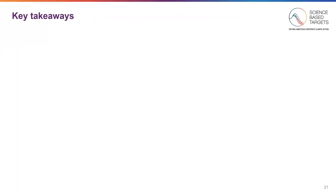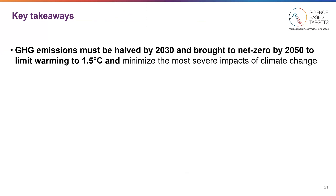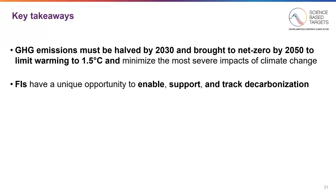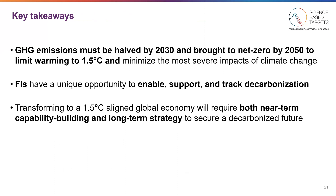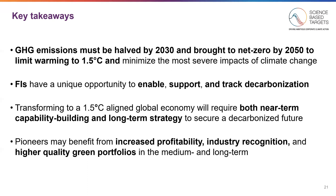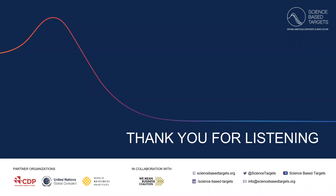Concluding this module, you should leave with a few key takeaways. Greenhouse gas emissions must be halved by 2030 and brought to net zero by 2050 to limit warming to 1.5 degrees and minimize the most severe impacts of climate change. Financial institutions have a unique opportunity to enable, support, and track decarbonization. Net-zero transformation will require both near-term capability building and long-term strategy. Pioneers may benefit from increased profitability, industry recognition, and higher quality green portfolios in the medium and long term. Thank you for listening to this module.